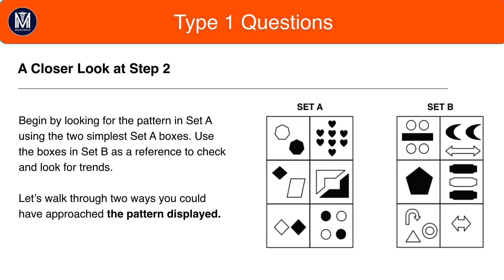So, this is the pattern that we saw before. Set A has an even number of shapes, and Set B has an odd number of shapes. Remember, step one, ignore the test boxes and look at the pattern first.